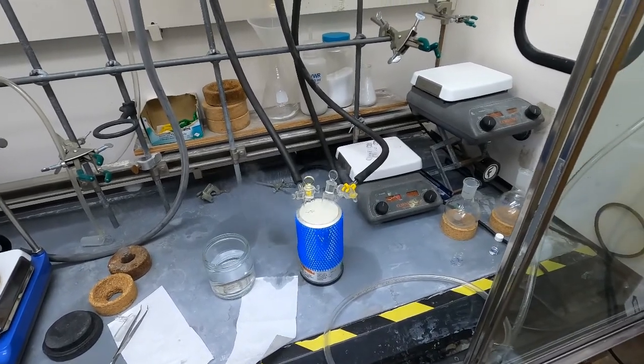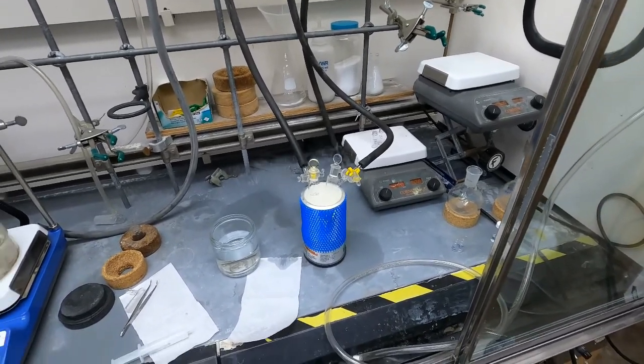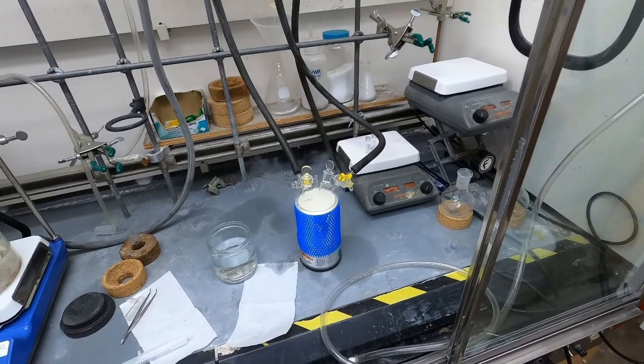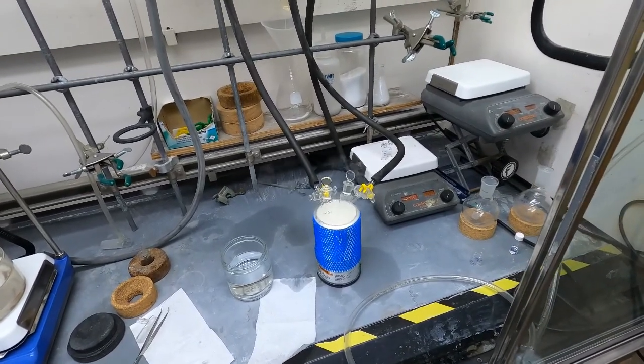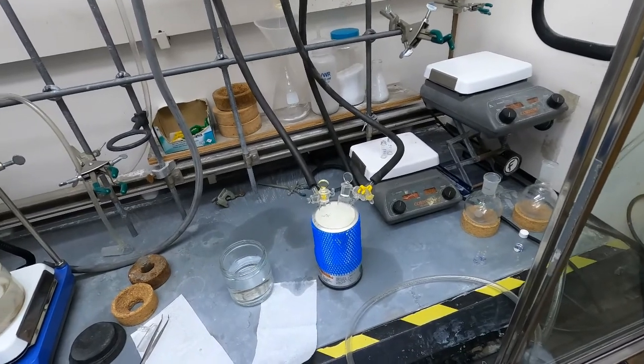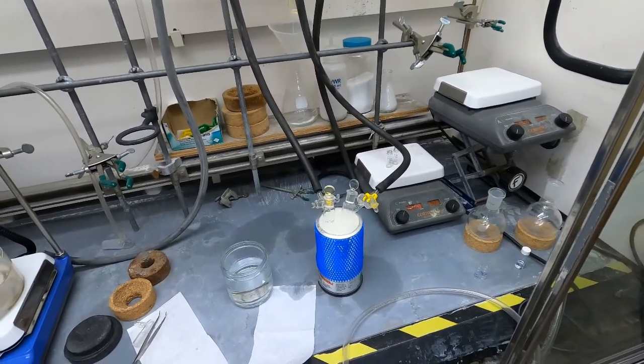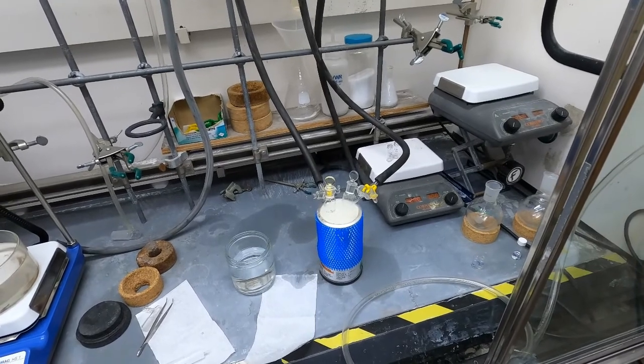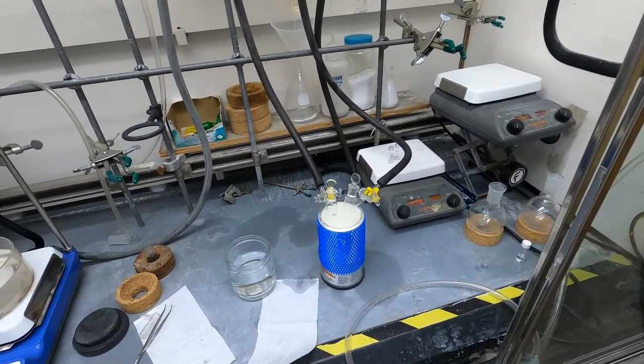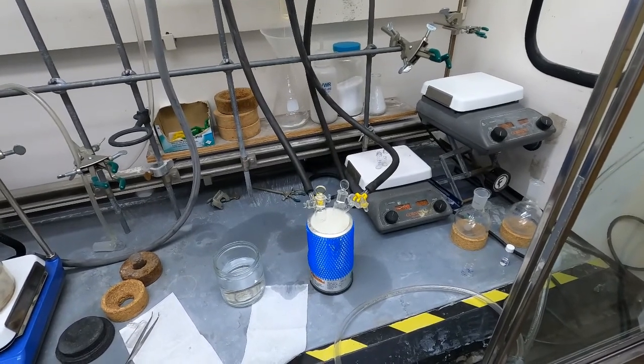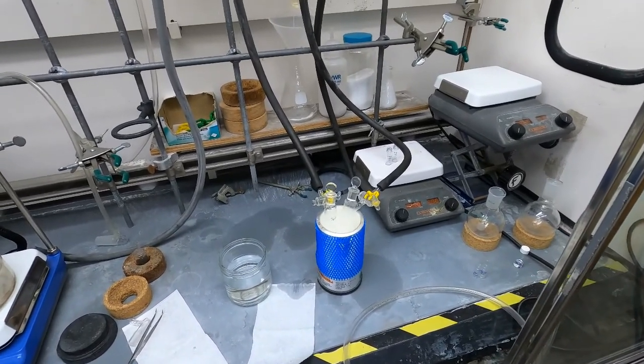The purpose of a freeze pump thaw is to get all of the air and specifically the oxygen that could be bad for a reaction out of the reaction mixture. We freeze the solvent and after the solvent is frozen we're going to open the stopcocks out to vacuum, basically removing the head space in these Schlenk tubes.